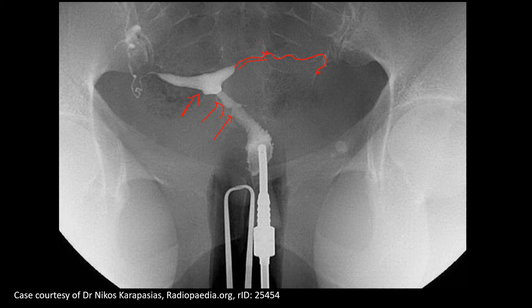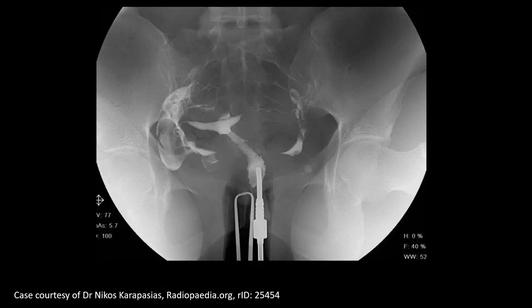Similarly, you can see the same appearance on the other side as well. When we inject further dye, the dye spills out from the fallopian tube. This indicates that the uterine cavity is patent as well as the fallopian tube is patent. Here, the dye has spilled out into the peritoneal cavity.